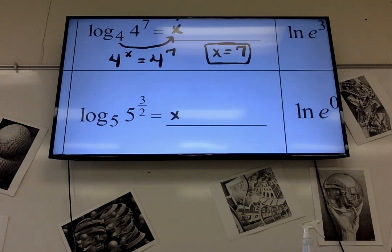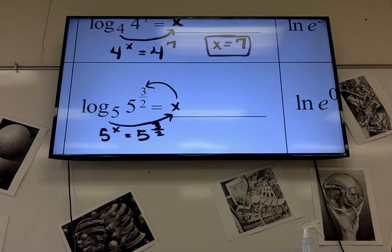Next one. This one's equal to x. It's got a log, so I can rewrite it as an exponential. 5 to the x equals 5 to the 3 over 2. So what's x?